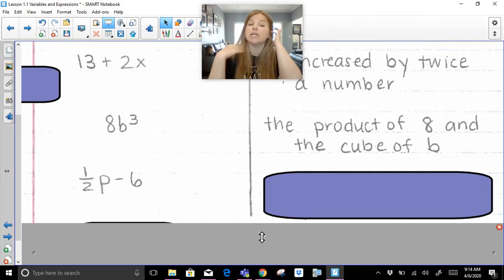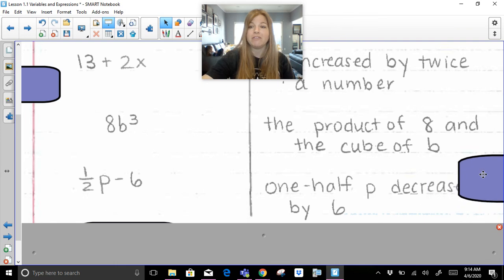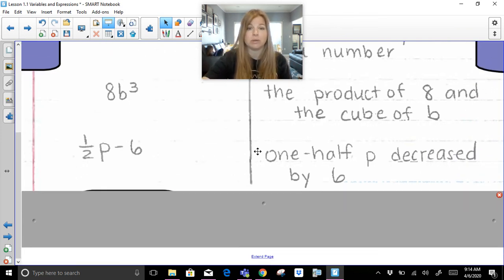If I wanted to give the most basic representation of this expression, I would say 1 half p or I could say 1 half times p or the product of 1 half and p, then I could say minus 6, subtracted by 6, less 6. Let's see what I wrote. 1 half p decreased by 6. Any of those would be totally good.